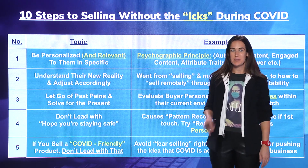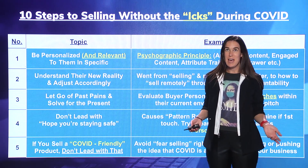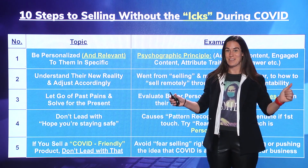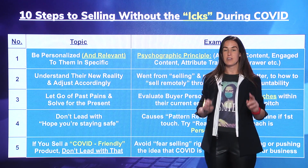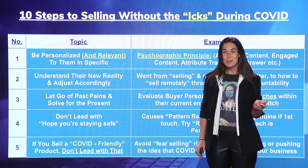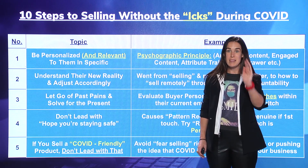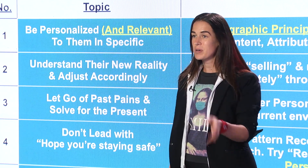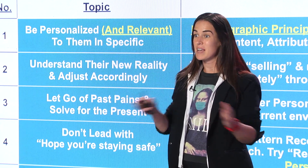Step number one is to be personalized and relevant to them in specific. I would argue that you should do this all the time. What I mean by personalization is not just personalizing down to the firmographic setup in terms of the company vertical, or the demographic setup in terms of their buyer persona role, or the technographic setup in terms of what tech stack they're using — but you want to go to them in specific. The difference between personalization and relevance: personalization means something you can send to one person specifically.